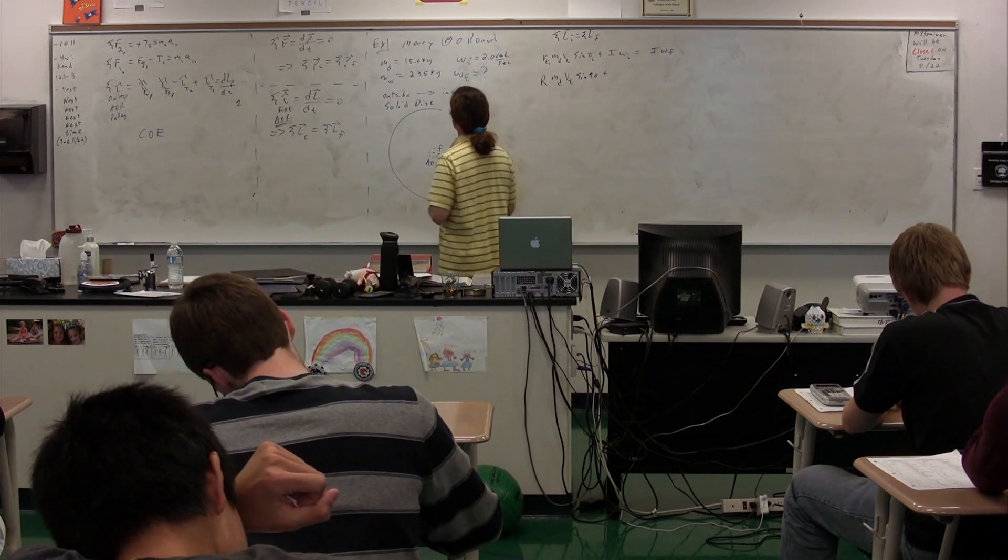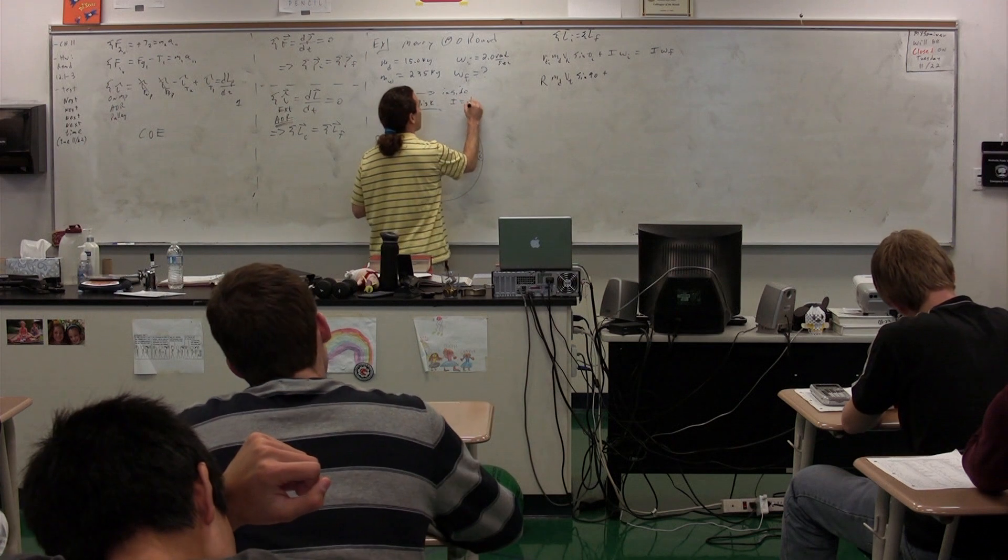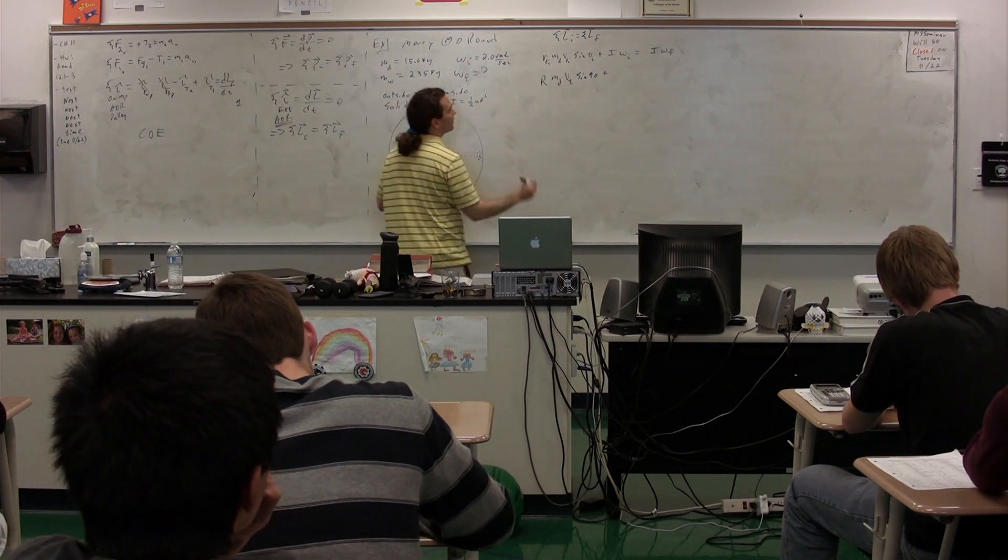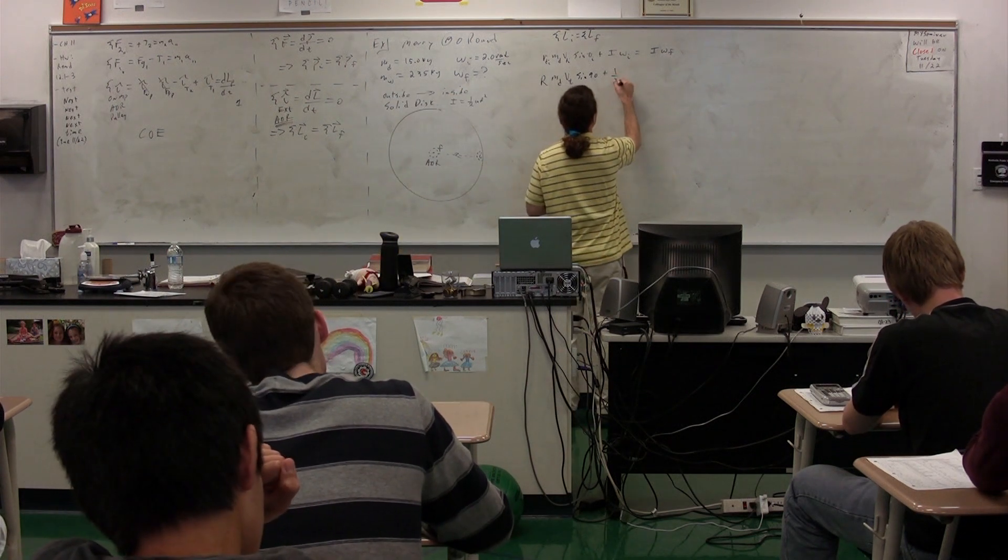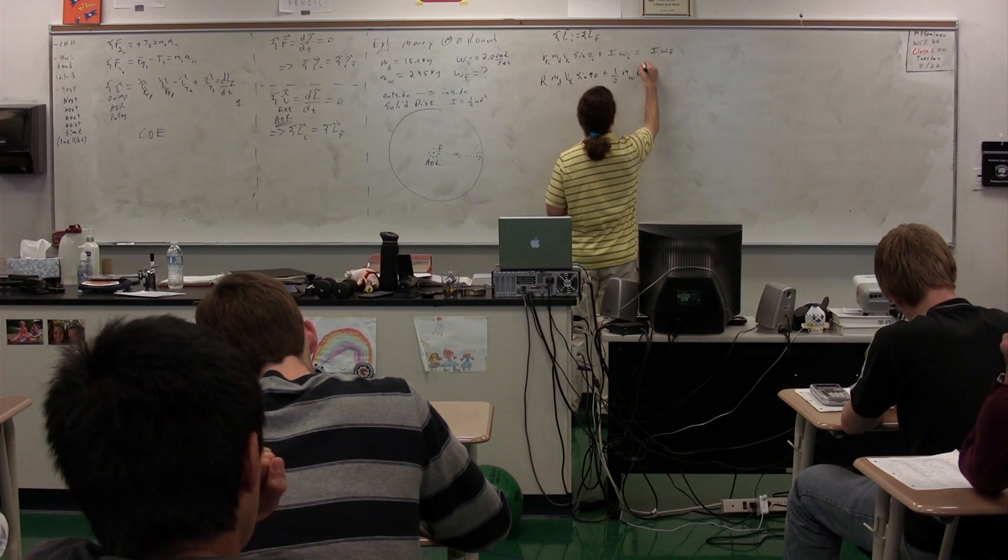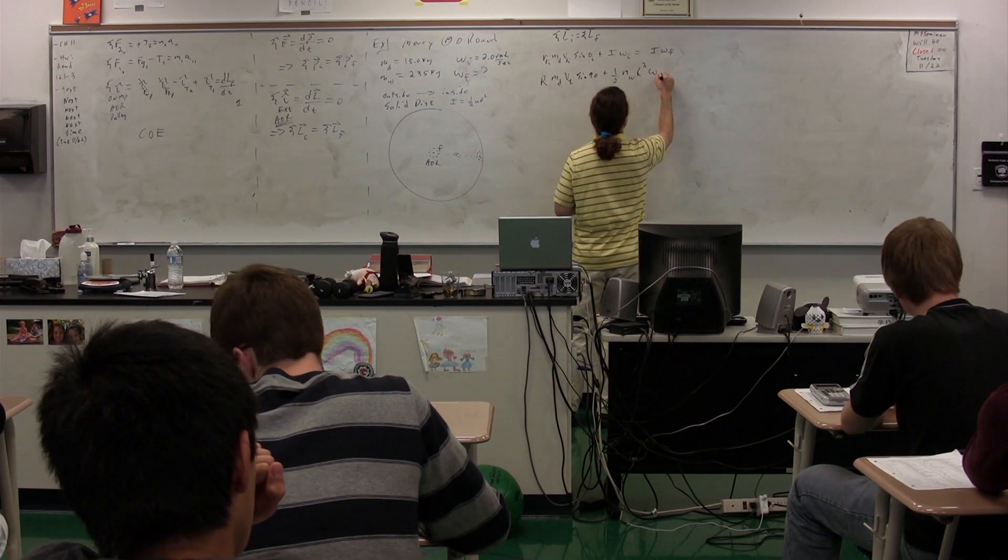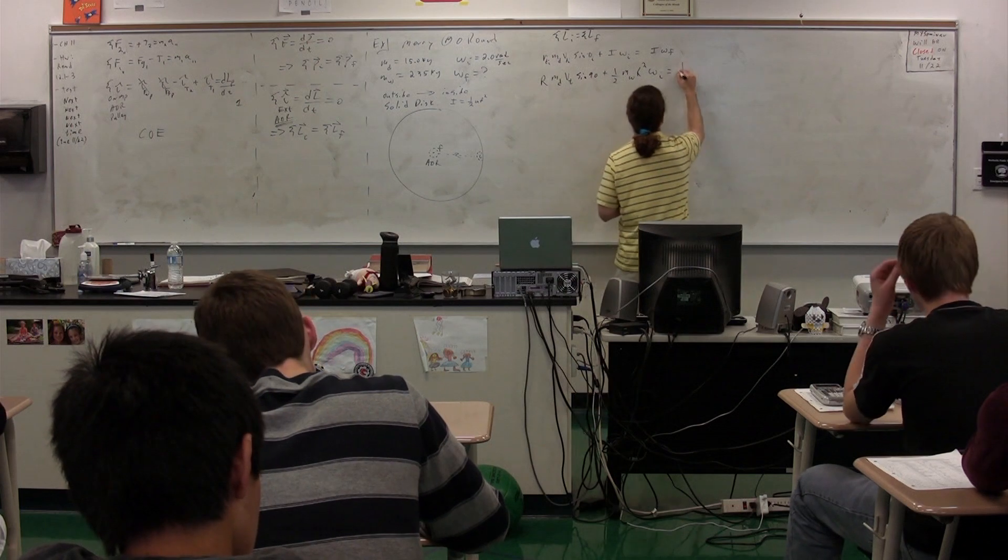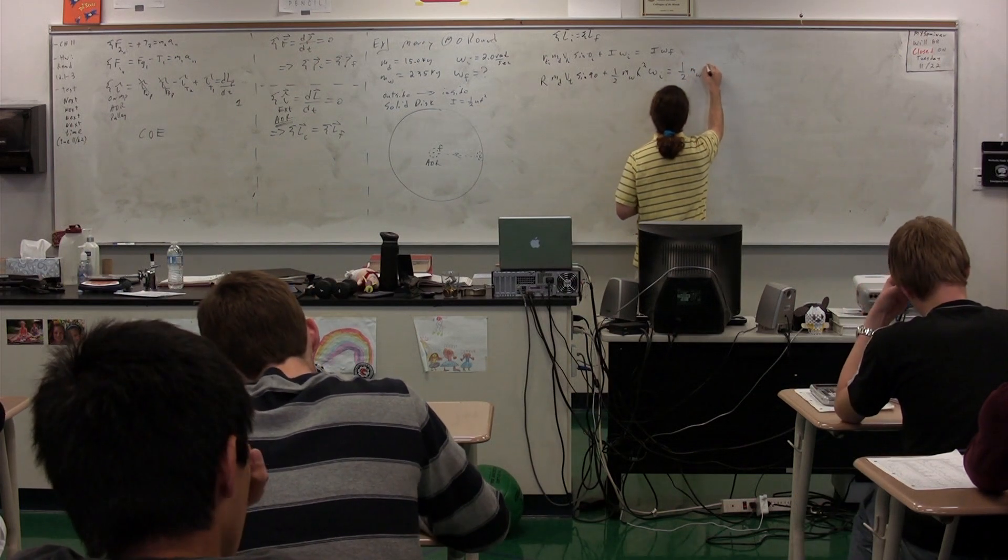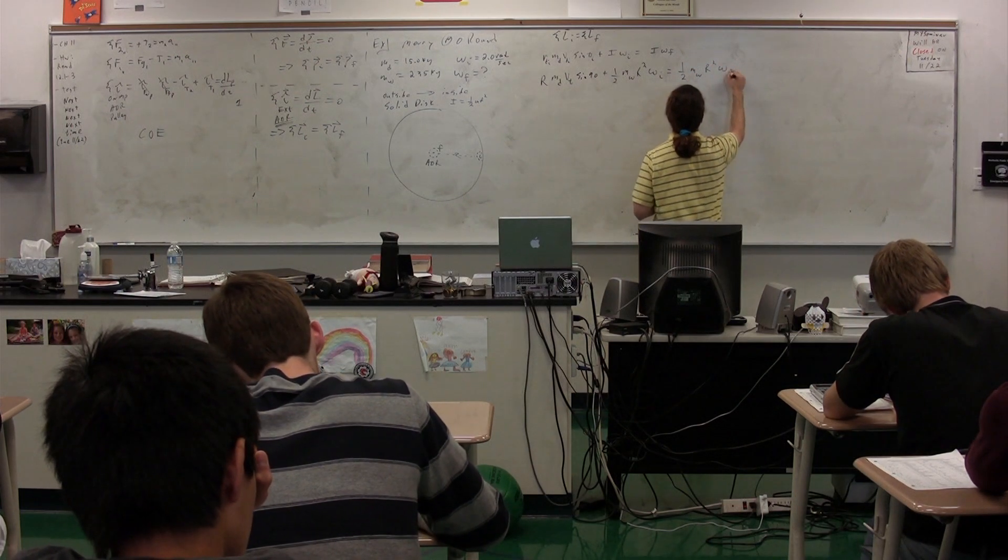We have the moment of inertia of the solid disk, which we know is 1/2 mR². So this is 1/2 times the mass of the wheel times the radius of the wheel squared times the angular velocity initial. And again, 1/2 mass of the wheel, the radius squared times the angular velocity final.